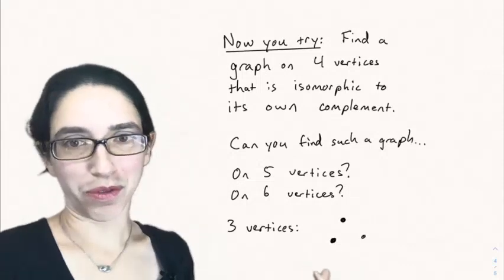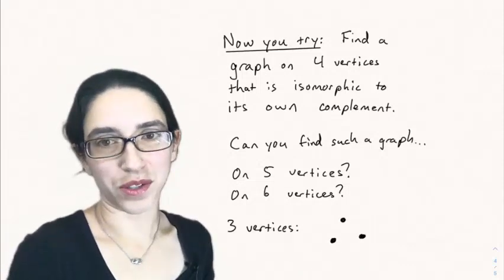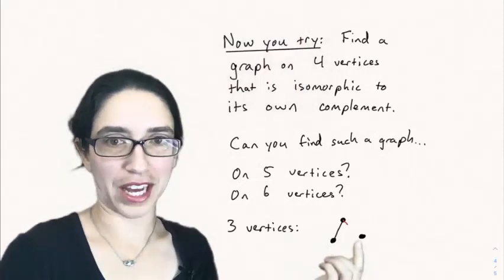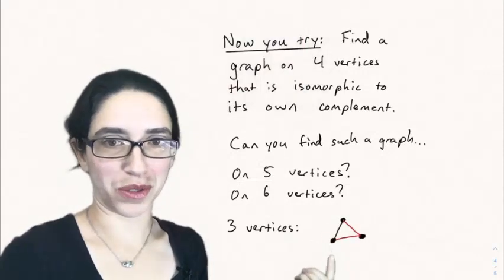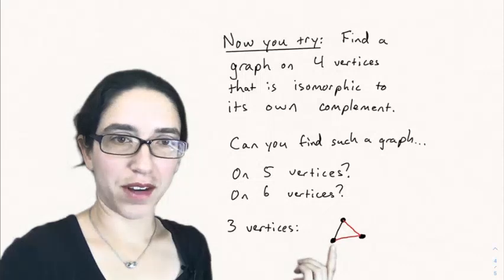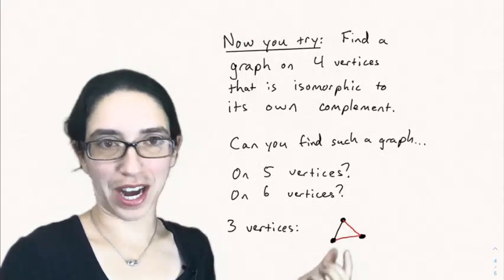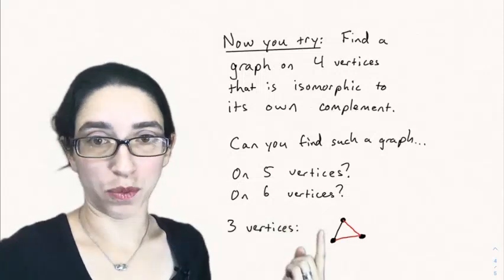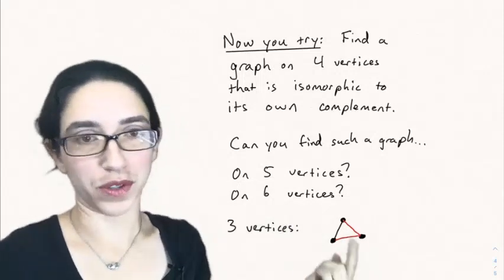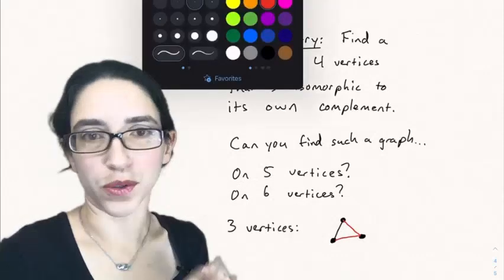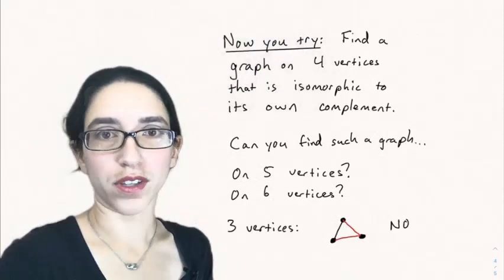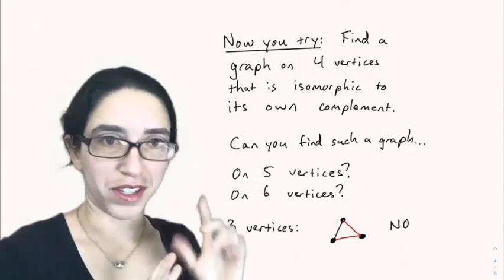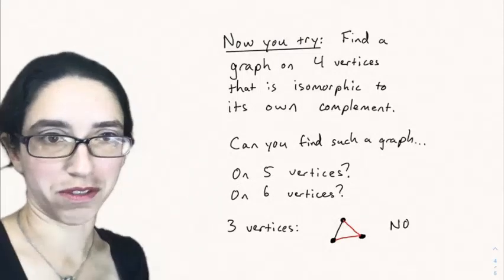So if you have three vertices and you draw a graph, well, the graph either has zero, one, two, or three edges. There's only three possible edges you can draw. And we can't have half the edges being in the graph and half being in the complement because there's only three edges in K3. So if you had one, its complement would have two. If you had two, its complement would have one and so on. So you can't have a graph on three vertices that's isomorphic to its own complement. But try to find one for four and see if you can do it for five and six as well.